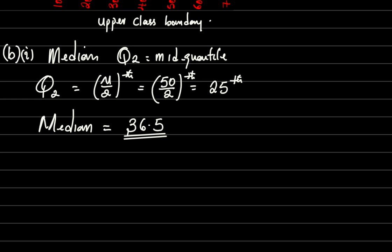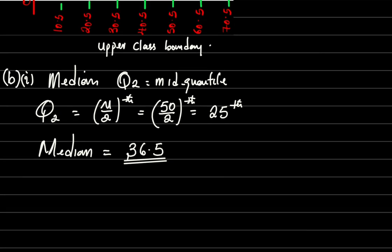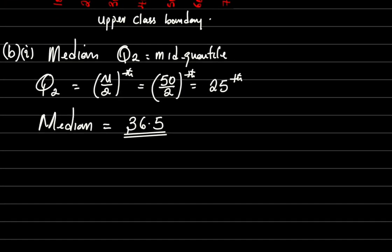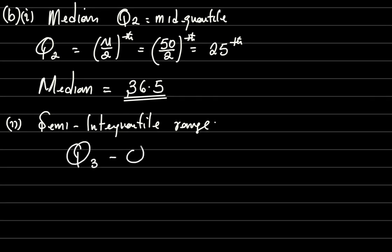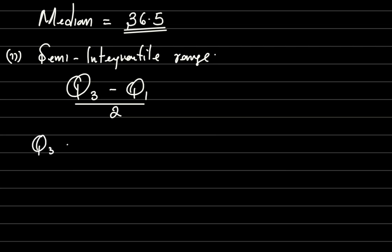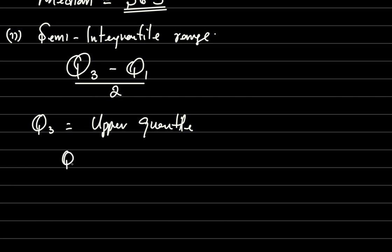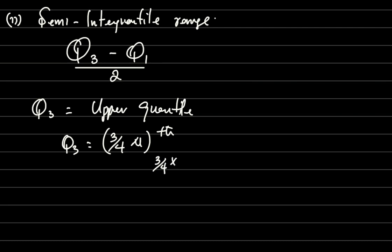Next we find the semi-interquartile range. The semi-interquartile range is (Q3 minus Q1) divided by 2. Q3 minus Q1 on its own is the interquartile range. Q3 is the upper quartile, and its position is calculated as 3 over 4 times n, which is 3/4 times 50, giving the position 37.5.